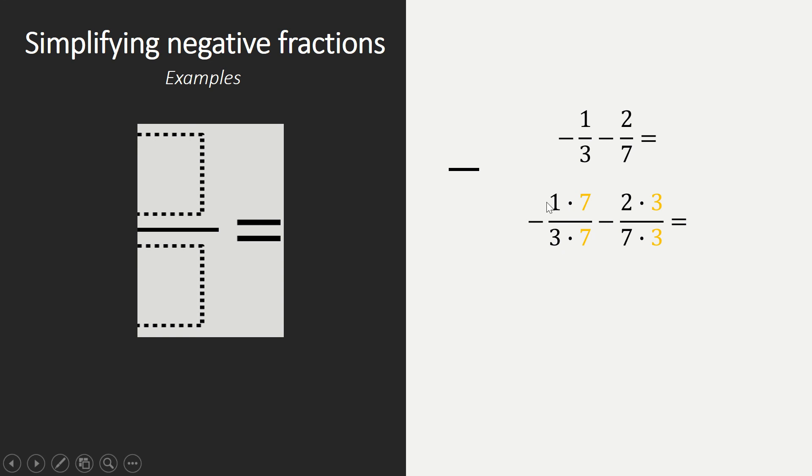What you do on the bottom, you need to do on top. What you get is minus 7 over 21 minus 6 over 21. That can be simplified as minus 7 minus 6 over 21. It's really important that you first simplify the numerator. Minus 7 minus 6 is the same as minus 13, and the denominator stays the same. Remember that we do not write minus 13 over there but in front of our fraction line.